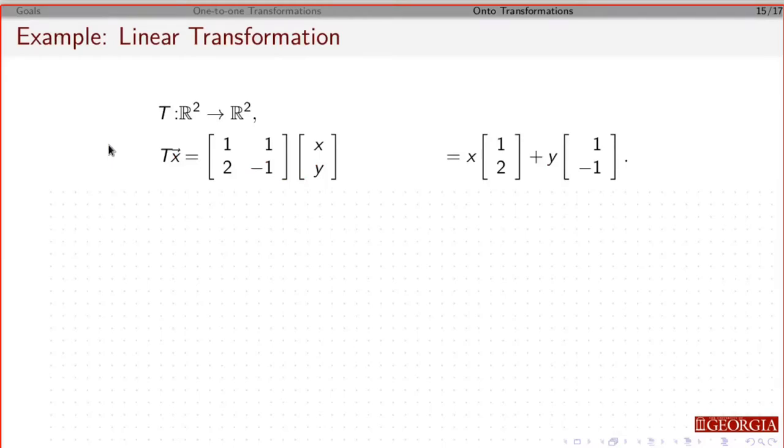All right, let's look at another example. So this is going from R2 to R2. So if you give me some vector x, this is going to give me another vector that's going to be somewhere. So this is going to give me some u.